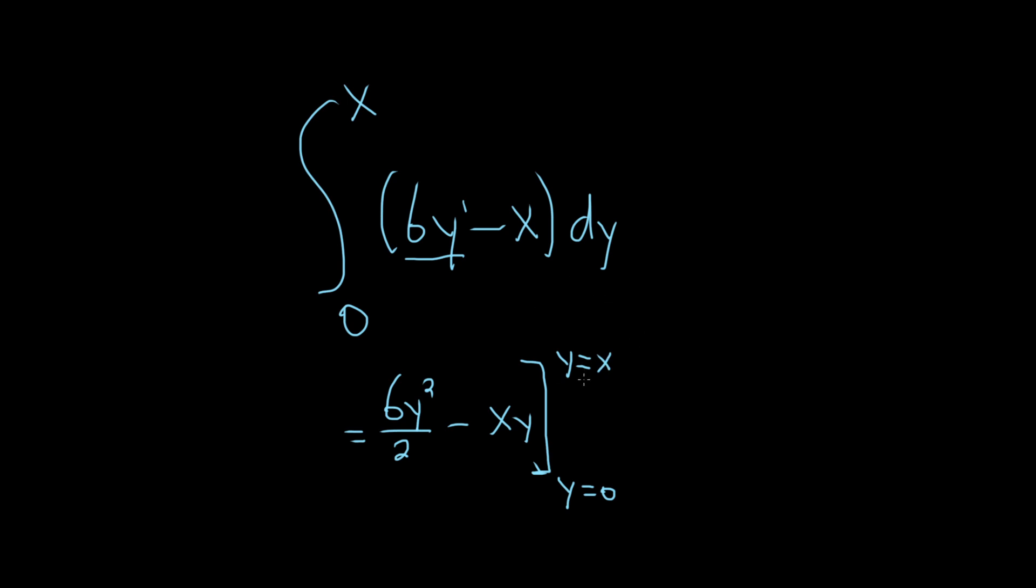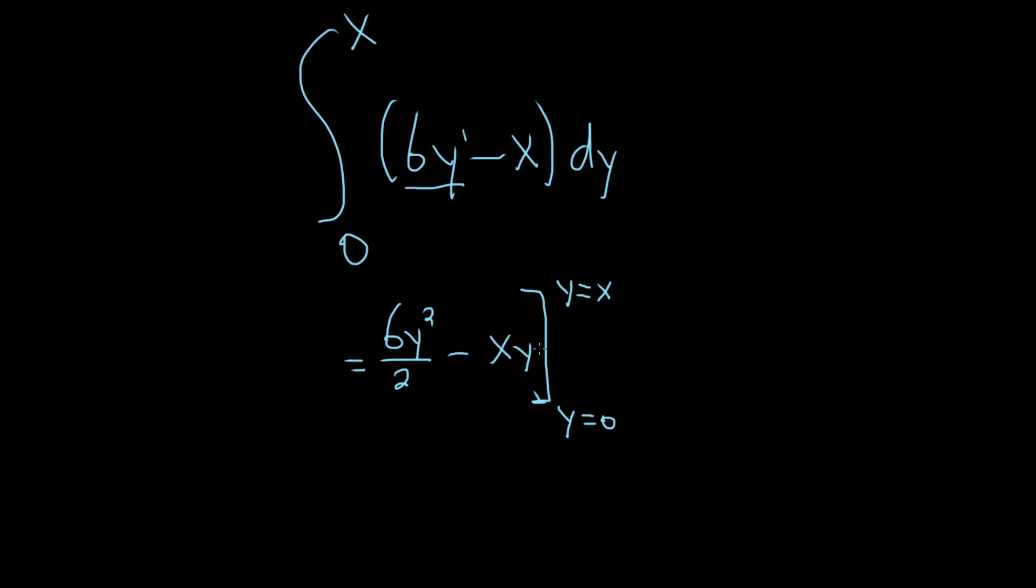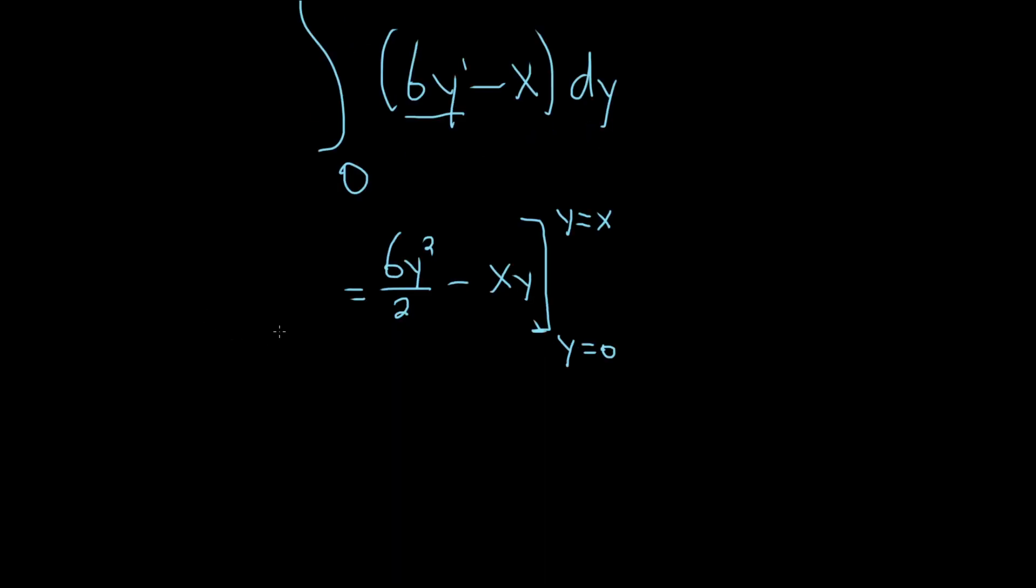It's beneficial to specify the y, so it just makes it a little bit easier to see what's going on. Before we do anything, let's clean this up. 2 goes into 6, 3 times, so this is equal to 3y squared minus xy.